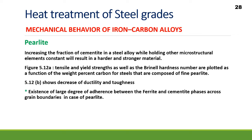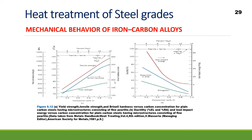Increasing the fraction of cementite in a steel alloy while holding other microstructural elements constant will result in a harder and stronger material. If you increase the carbon content or cementite content in pearlite, it will make it harder and stronger. However, we must keep in mind that cementite is harder but more brittle than ferrite. In this graph, yield strength, tensile strength, and hardness are plotted versus carbon concentration for plain carbon steel, and all three increase with increasing carbon content.